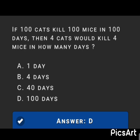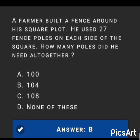Next MCQ: If 100 cats kill 100 mice in 100 days, then 4 cats would kill 4 mice in how many days? The answer is option D: 100 days.